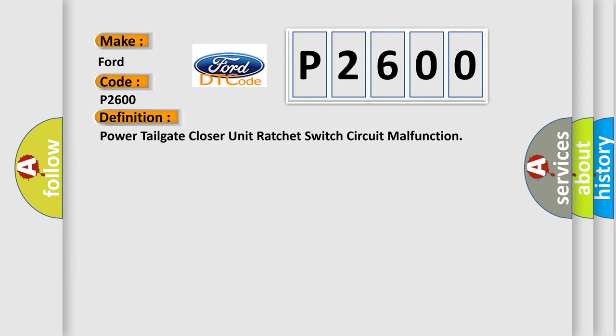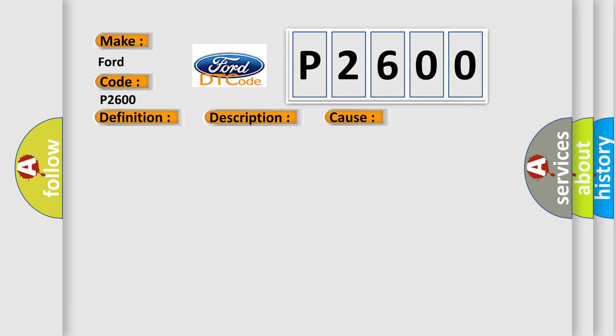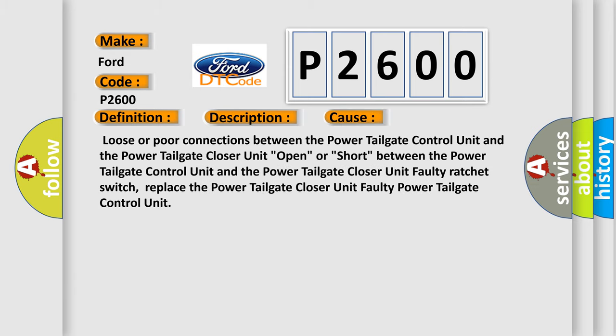Here is a short description of this DTC code. Poor communication between the power tailgate control unit and the power tailgate closer unit. This diagnostic error occurs most often in these cases: loose or poor connections between the power tailgate control unit and the power tailgate closer unit; open or short circuit between the power tailgate control unit and the power tailgate closer unit; faulty ratchet switch; or a faulty power tailgate control unit requiring replacement.